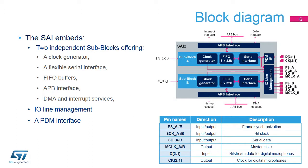The SAI is composed of two independent sub-blocks: sub-block A and B. Each sub-block has its own APB interface, clock generator, FIFO buffer, DMA interface, and interrupt interface. Each sub-block can be configured in receiver or transmitter mode and in master or slave mode with its own protocol. Internal synchronization allows two sub-blocks to be synchronized. For each sub-block, FS is the frame synchronization, SCK is the bit clock, SD is the serial data, and MCLK is the master clock.